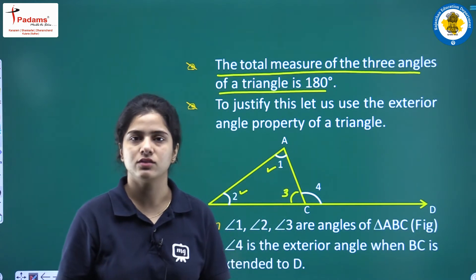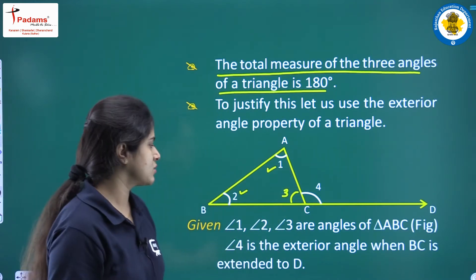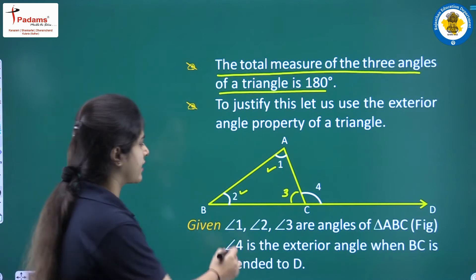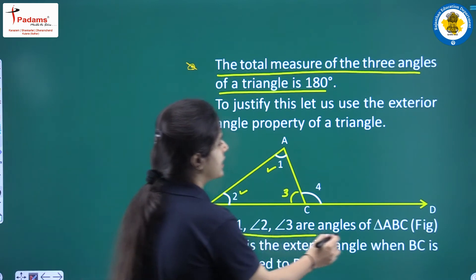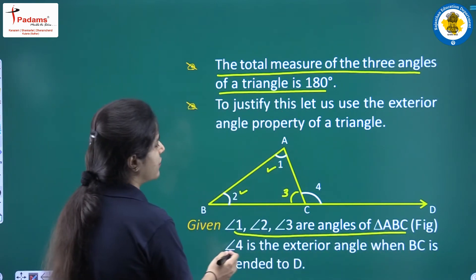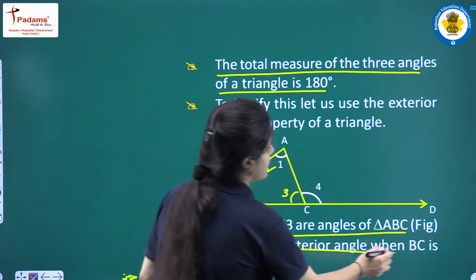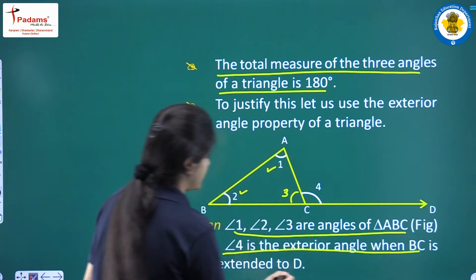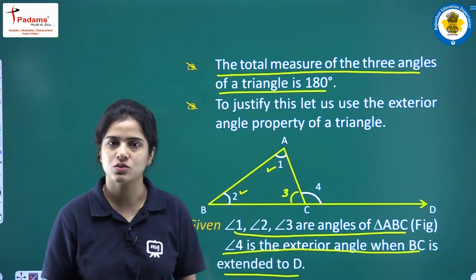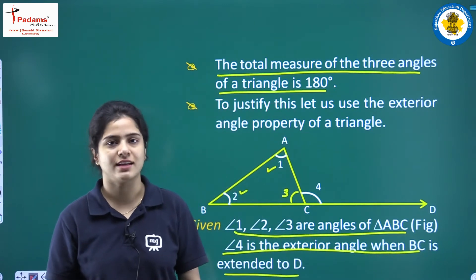Angles 1, 2, and 3 are the angles of triangle ABC, and angle 4 is the exterior angle formed when BC is extended to D.